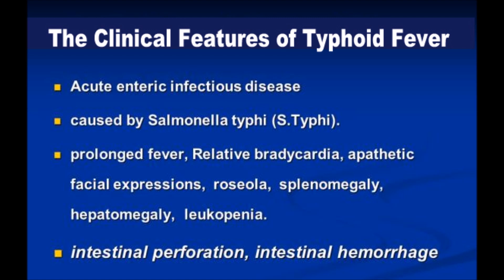Looking at the clinical features of typhoid: it has a three-week span of different disease manifestations if not properly treated. In the first week, symptoms include headache, malaise, cough, and sore throat, and the temperature may increase to 40–41 degrees over four to five days. It also comes with vague abdominal pain, constipation, and diarrhea — the diarrhea being due to invasion of the intestine by salmonella typhi.